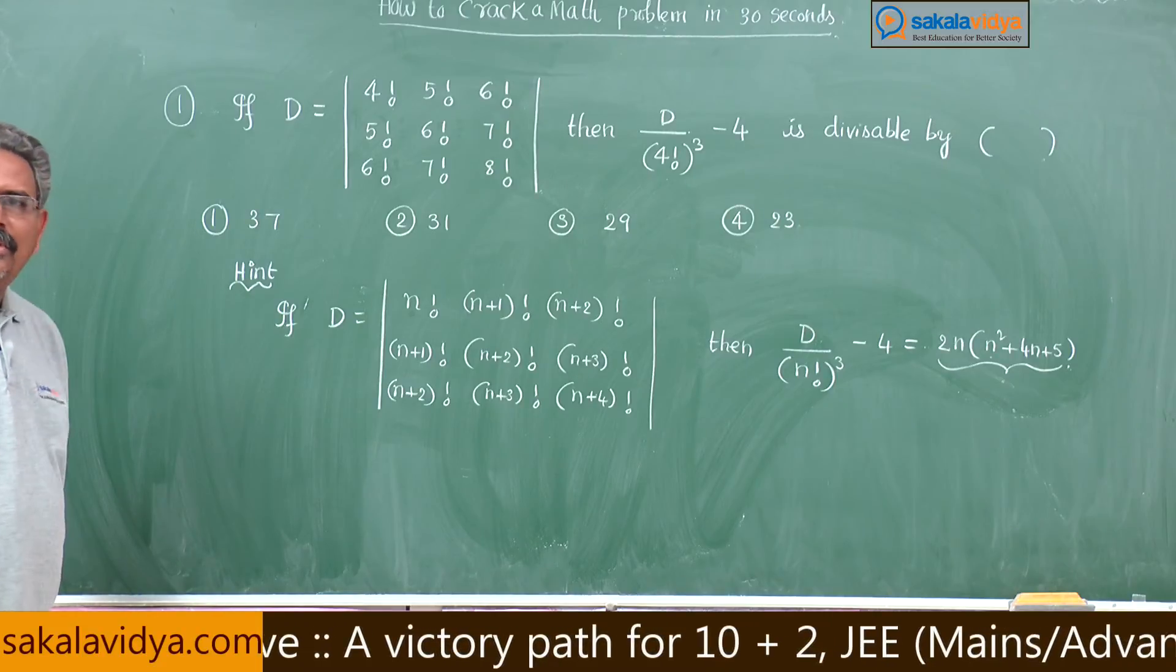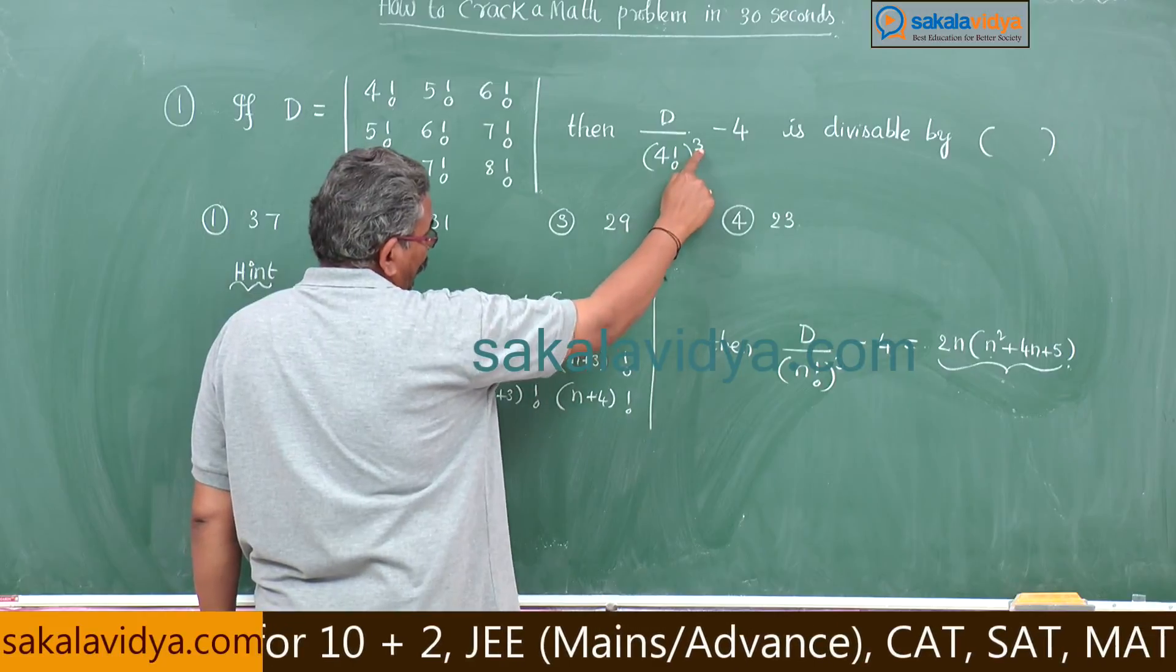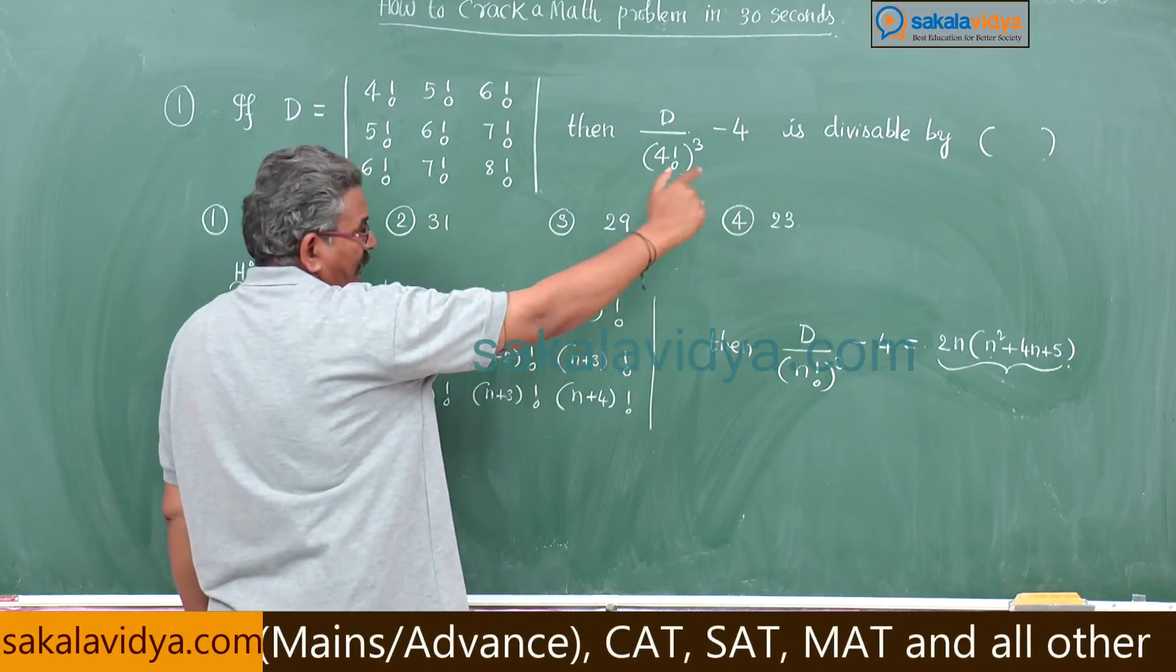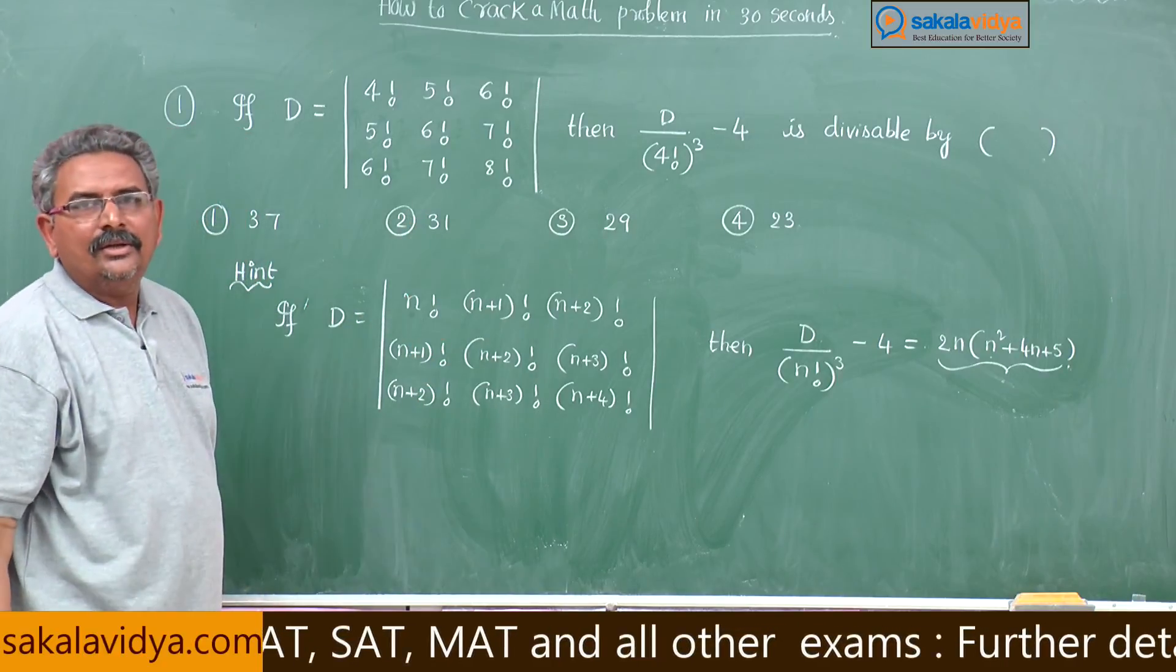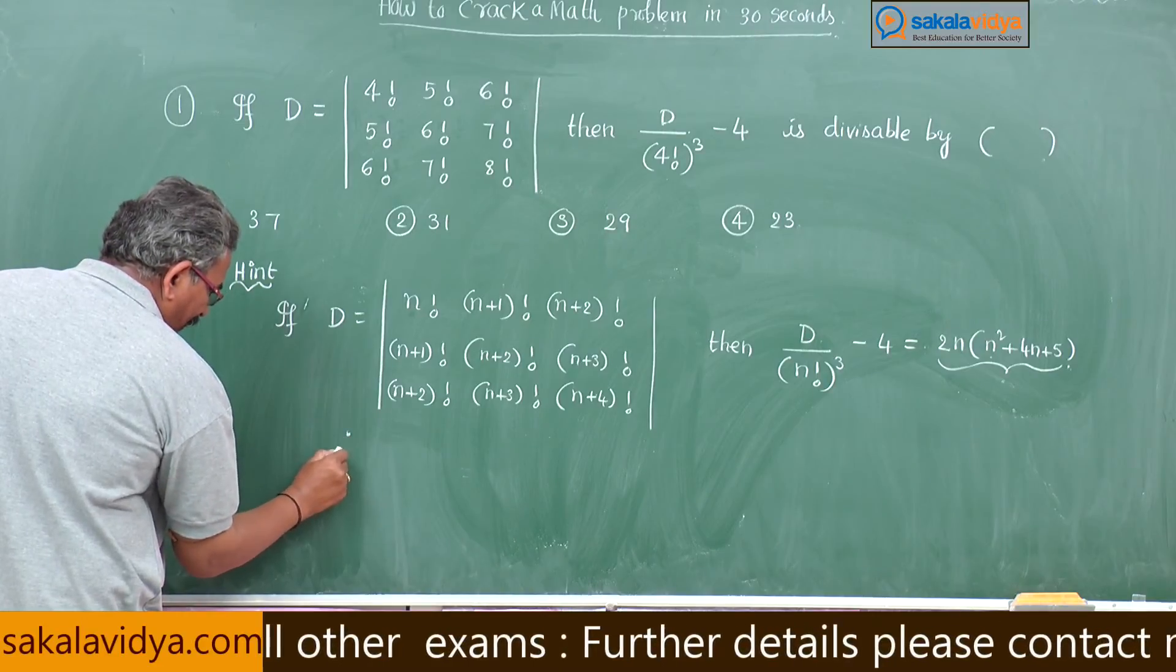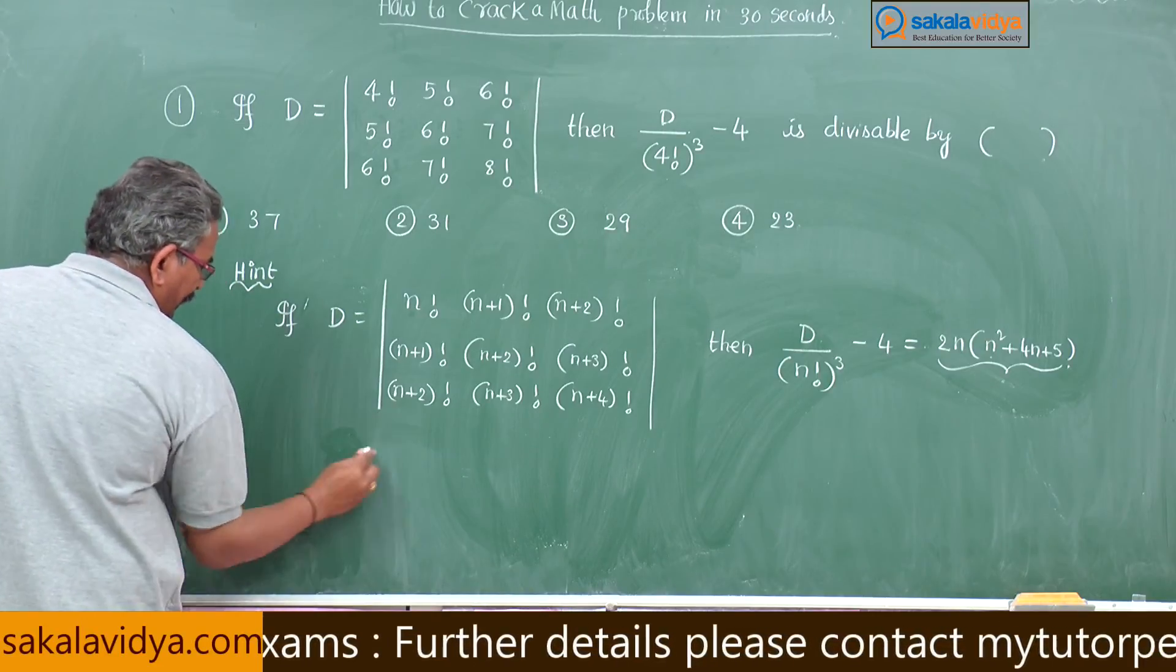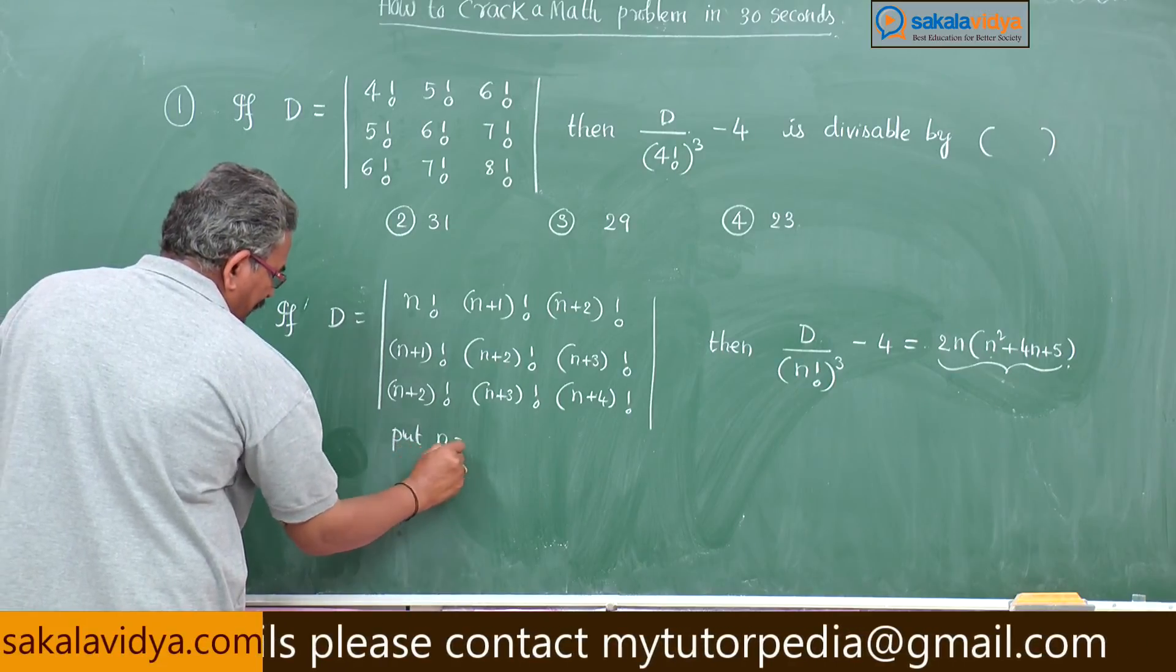Now, let us come to the problem, what we have to find out D by 4 factorial cubed minus 4. Divisible by 37, 31, 29, 23 we have to verify. That means, first let us find out now. Here put N is equal to 4.